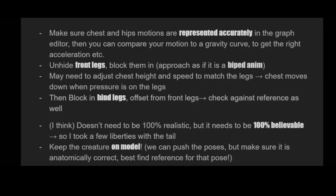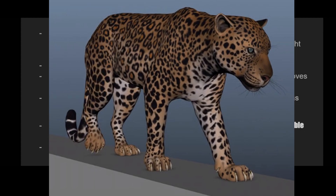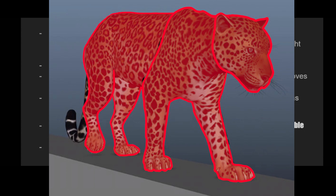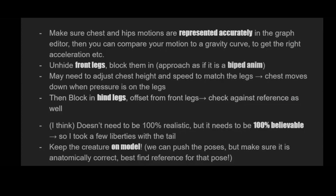Here's a quick overview and summary of Daniel's blog. For me it was important to represent the curves accurately in the graph — which is what we did. He also talks about isolating the creature: do the head and chest first, then do the front legs and animate it as a biped, then add the hind legs blocked in the same as your front legs but offset by half a cycle. That gives you a ballpark correct movement for your quadruped. It doesn't have to be 100% realistic, but it needs to be 100% believable.